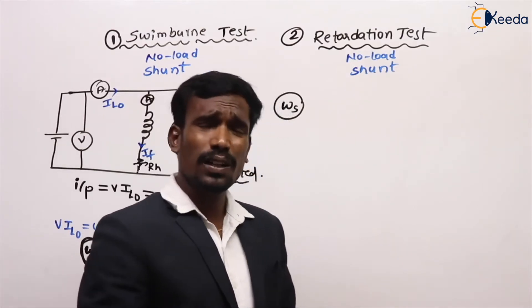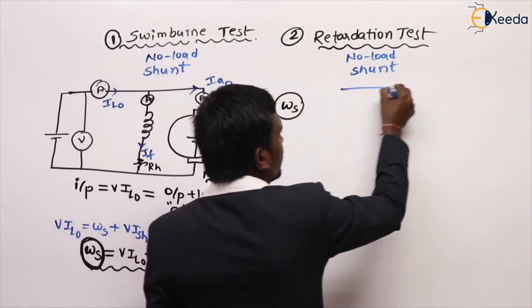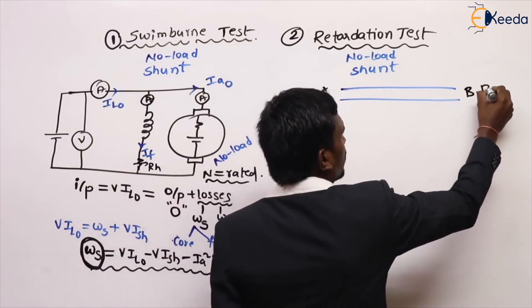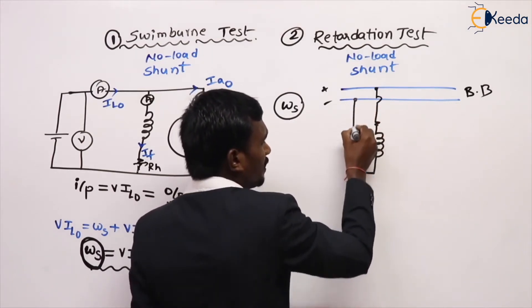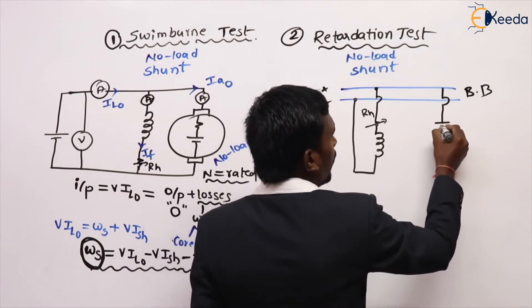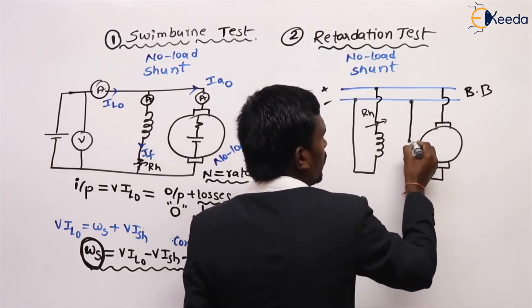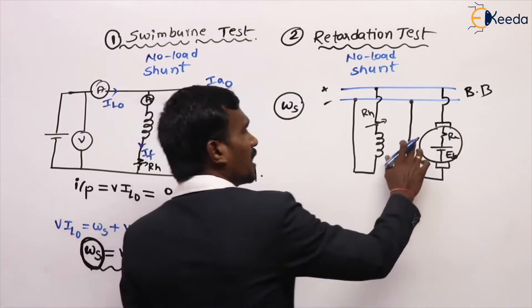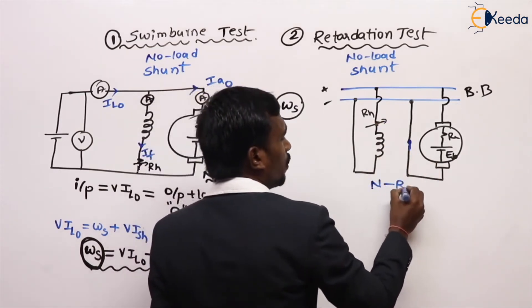In the retardation test also, what we have to find is the stray losses. Let's look at the diagram. This is my DC bus bar — positive and negative. This is my field winding. By rheostat, we have to make sure that the speed of the motor is at rated value. This is my DC shunt motor. Here we have a switch. This is my armature with back EMF. Initially the switch is closed, and by setting the rheostat, set the speed of the motor at rated speed.